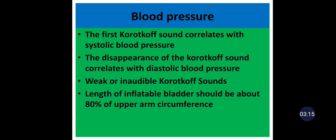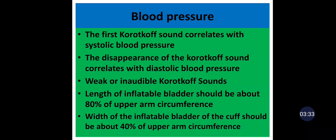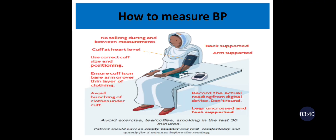When measuring blood pressure, the cuff size should be appropriate for each patient, because an inappropriately small cuff overestimates the blood pressure and a large cuff underestimates it. The length of the inflatable bladder should be about 80% of the upper arm circumference, and the width should be about 40% of the upper arm circumference.